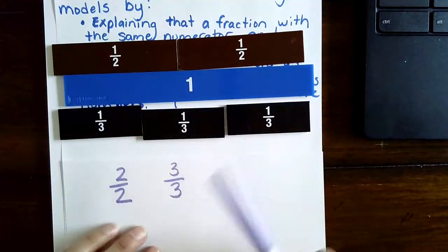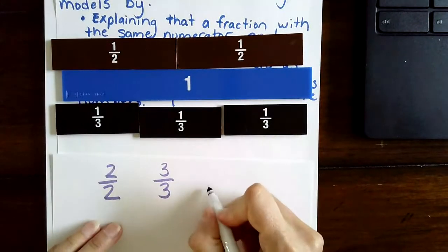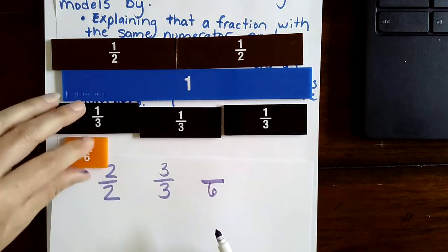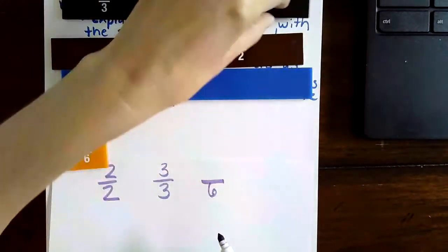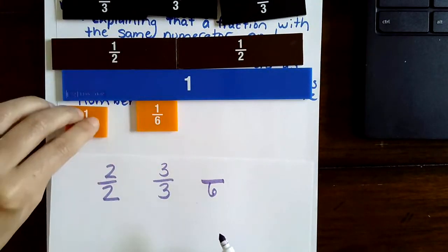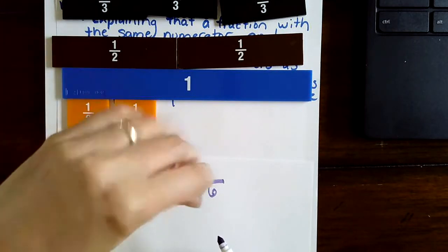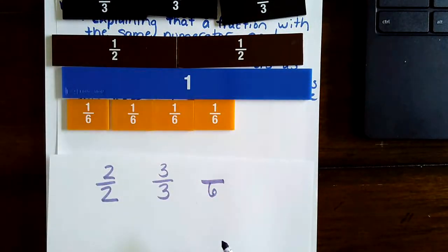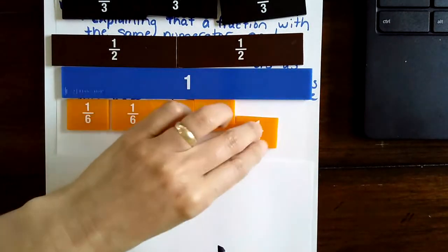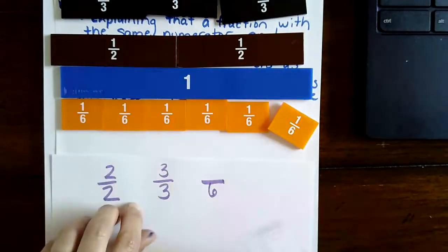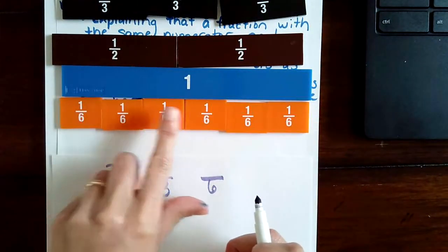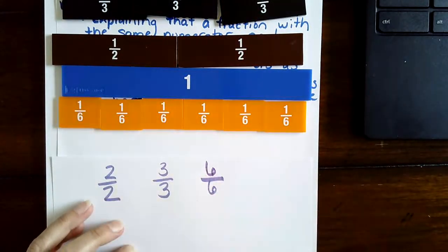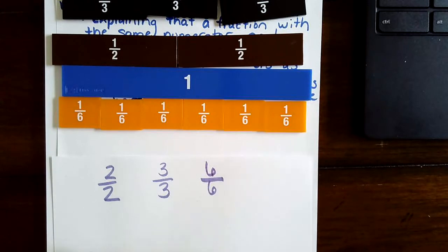Now what about six? How many six would be one whole? One-sixth, two-sixths, three-sixths, four-sixths, five-sixths, and six-sixths. So six-sixths is the same thing as one whole.